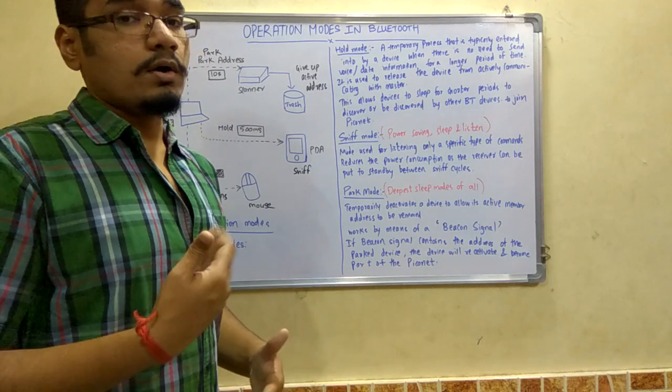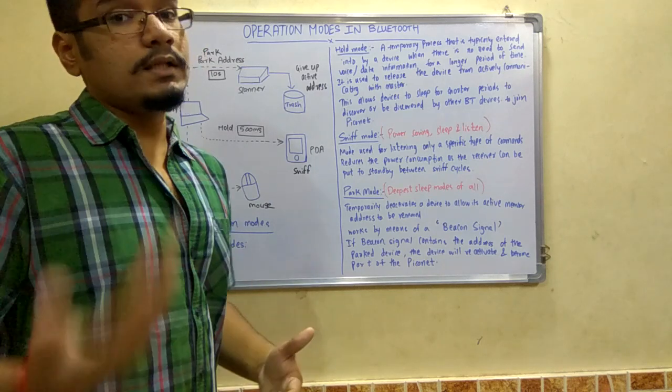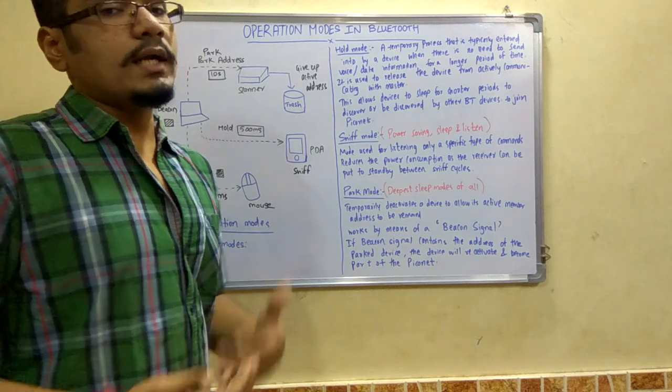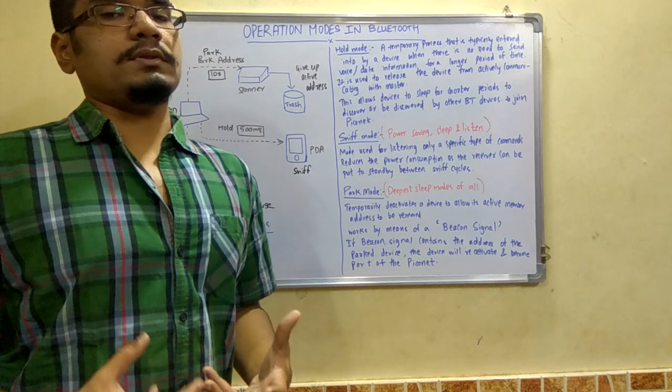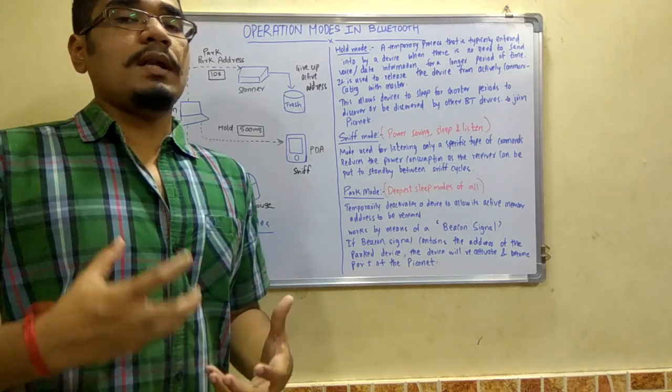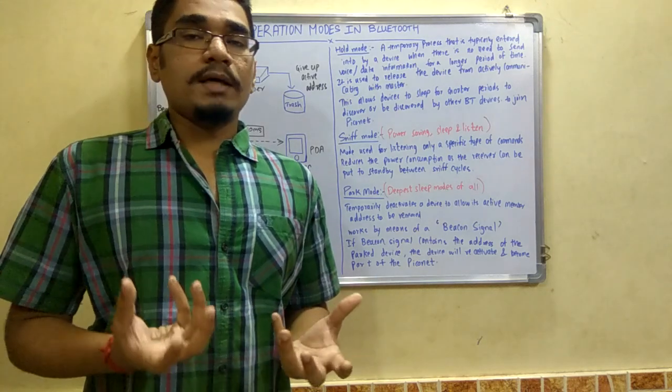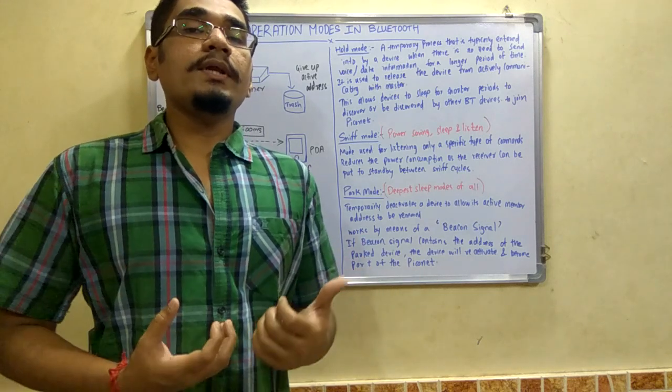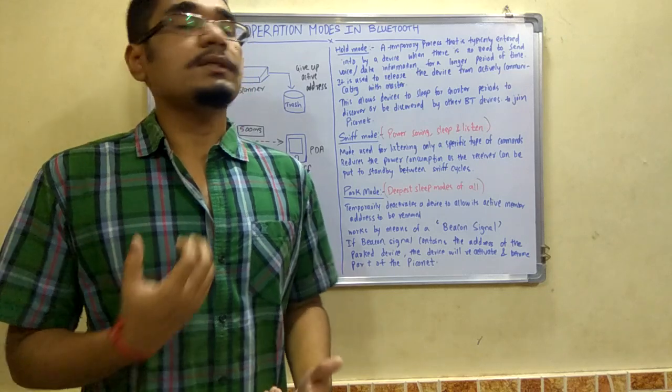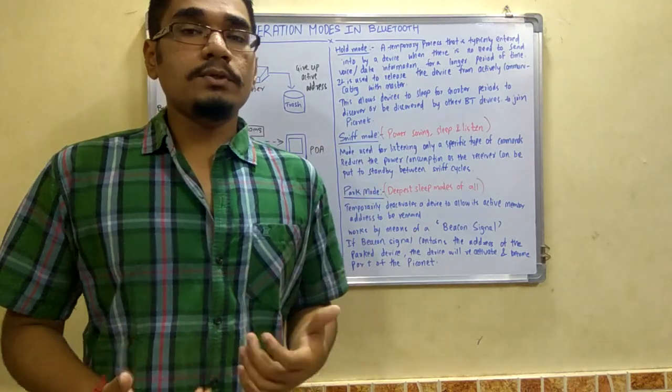Hold mode is used to discover or be discovered by other Bluetooth devices to get connected into the piconet. It works when there is one master and many slave devices, and each of them wants to communicate in a round-robin fashion. Then hold mode comes into picture.